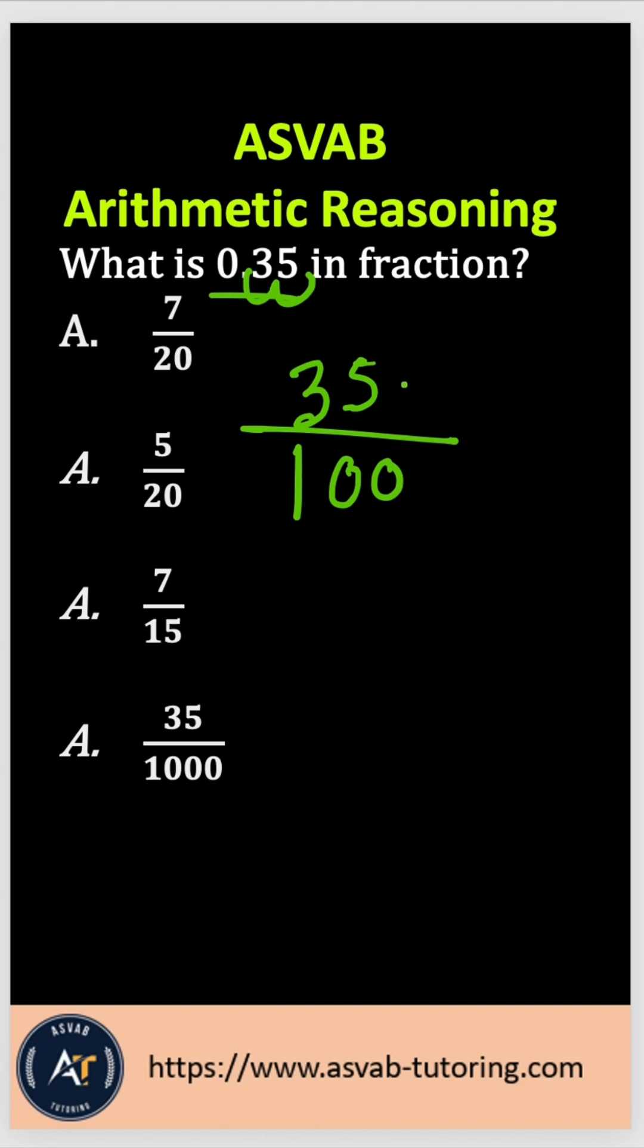Now what you want to simplify, you have to divide top and bottom by the same number. So the common number you could divide 35 and 100 is 5. So divide both by 5. 35 divided by 5 gives you 7. 100 divided by 5 gives you 20. With that, the correct answer is option A.